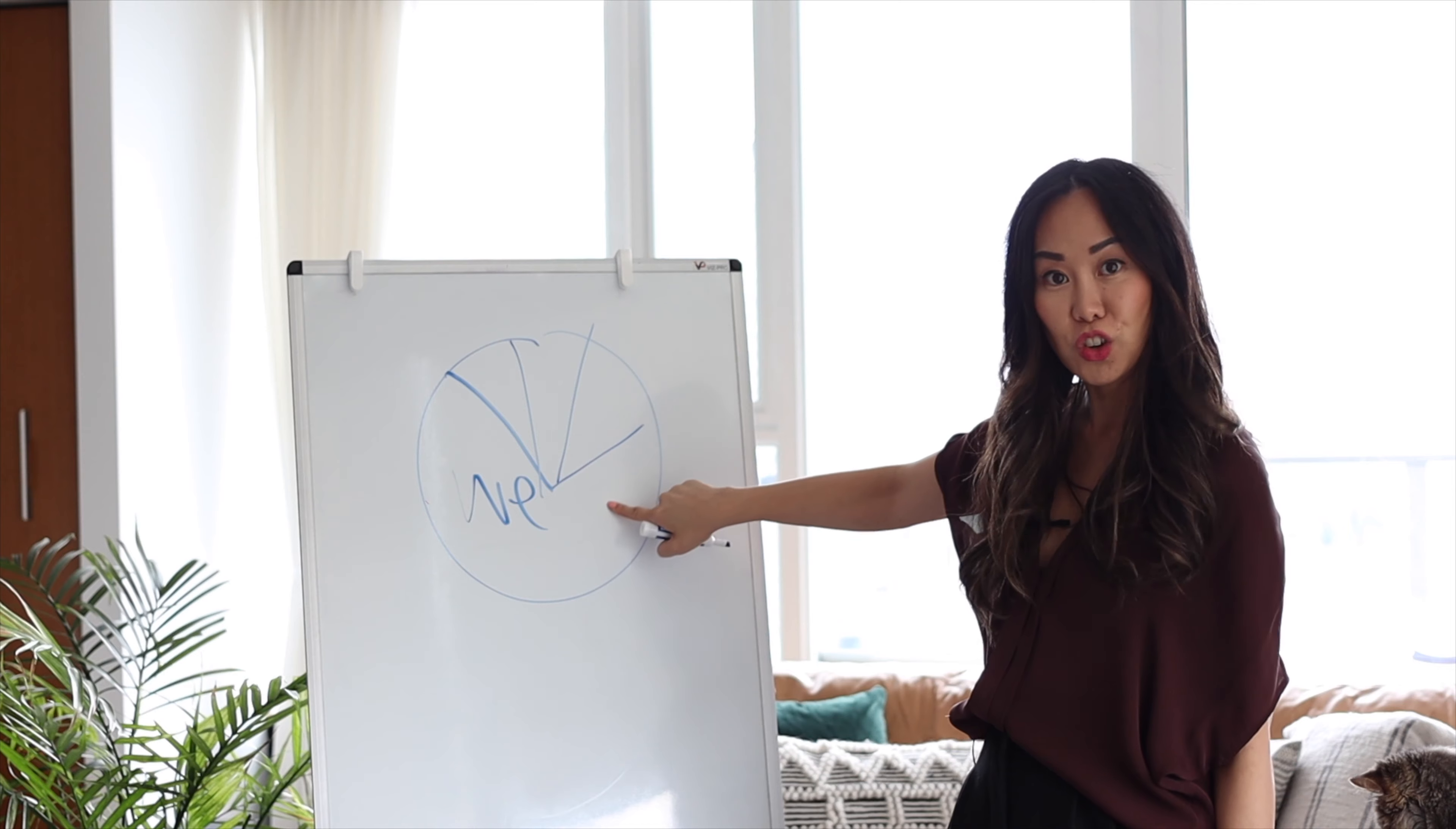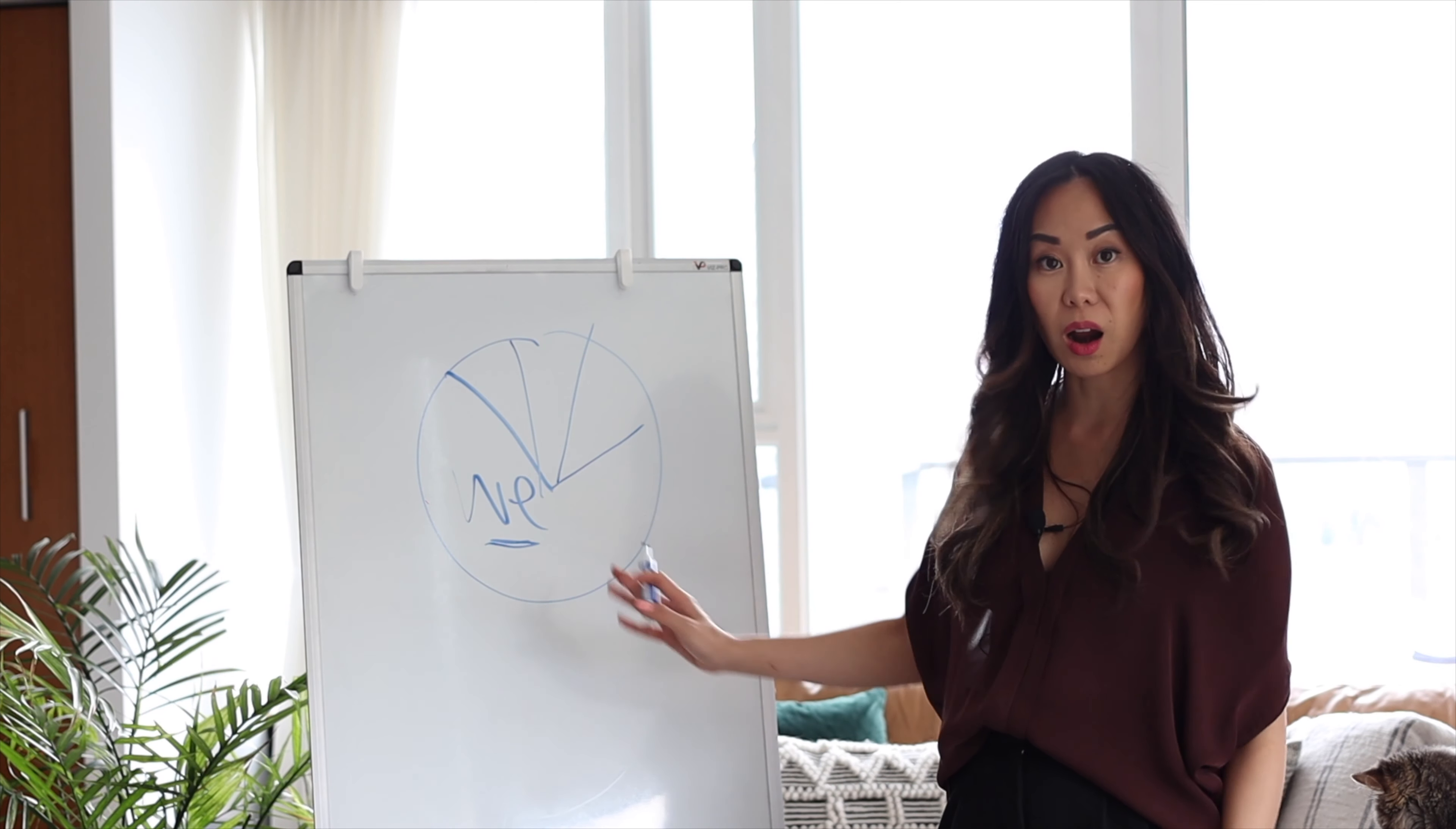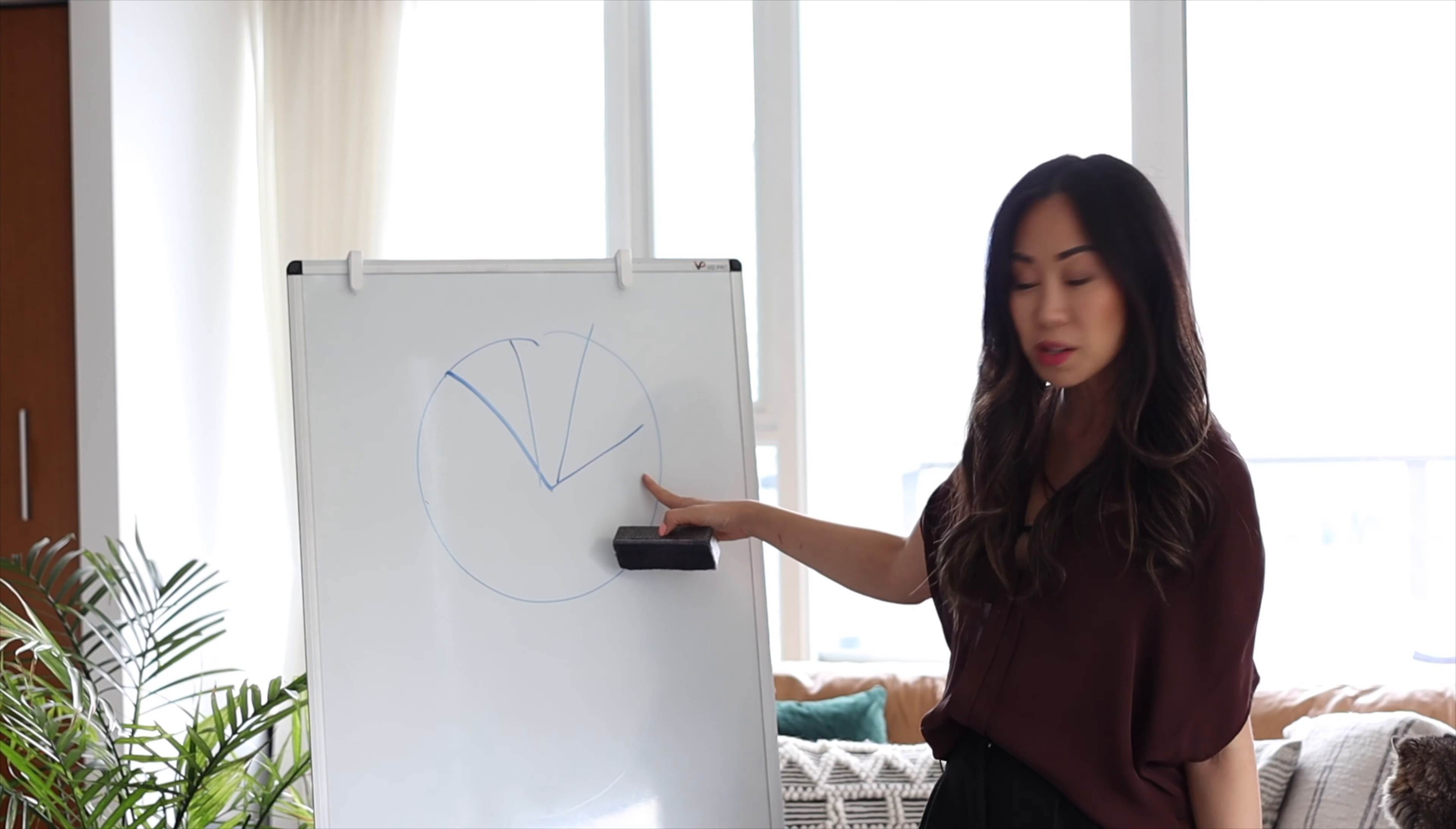If this much of your pie was devoted to the we, what happens when the we is not there? Well, you've got this much to fill, whether it's 70 percent or 60 percent.